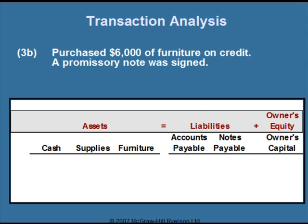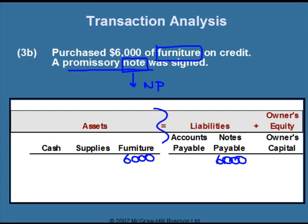In this transaction, the company purchased $6,000 of furniture on credit and a promissory note was signed. Whenever a promissory note is mentioned, the word note means notes payable. So notes payable is one account changing. The other account is furniture — we put $6,000 under the furniture column, and since the company has more furniture, that number is increasing. We also put $6,000 under notes payable. Notes payable is a debt, so the company's debt goes up. The accounting equation is in balance: positive $6,000 on assets equals positive $6,000 on liabilities and owner's equity.